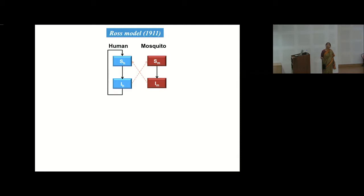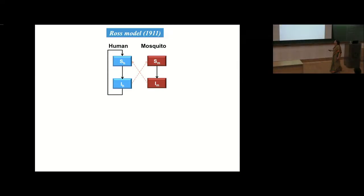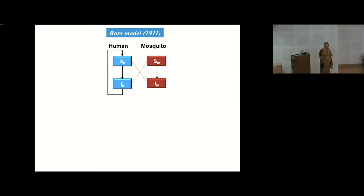For the human part, what model is it? It is a SIS model. For the mosquito it's a simple SI model, because all infected mosquitoes die, whereas all infected humans — at least for malaria — recover and become susceptible again, either through their own immunity or through drugs. There is interaction given by the red dotted lines: when an infected mosquito bites a susceptible human, it transfers the infection; when a susceptible mosquito bites an infected human, it picks up the infection.